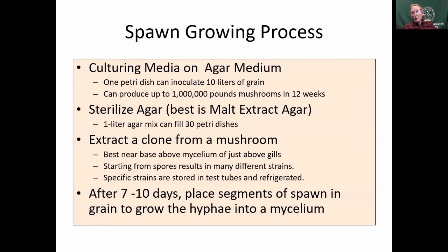The growing process: you culture on agar, which is a seaweed-based medium common in biology. From one petri dish you can inoculate 10 liters of grain, and from that you can produce a million pounds of mushrooms in 12 weeks — that gives you an idea of the expansion. You sterilize the agar, extract your clone from near the base above the mycelium, and after seven to ten days place segments of spawn in grain.